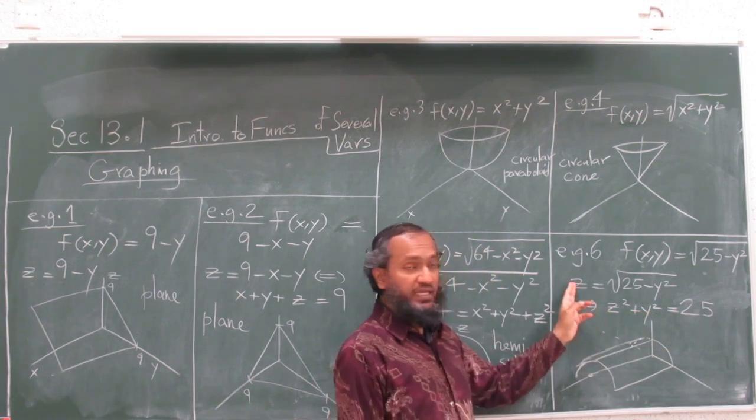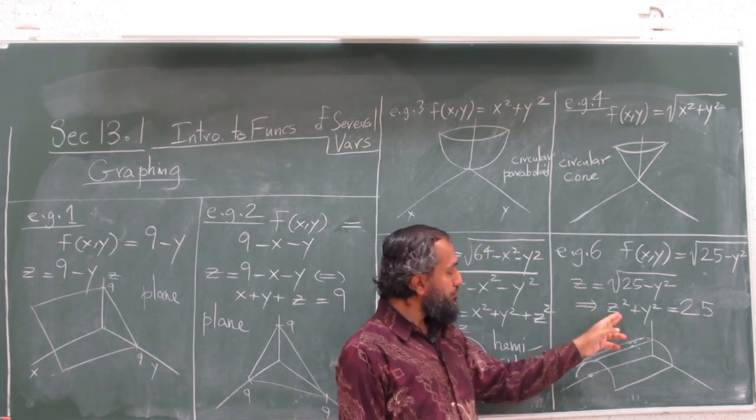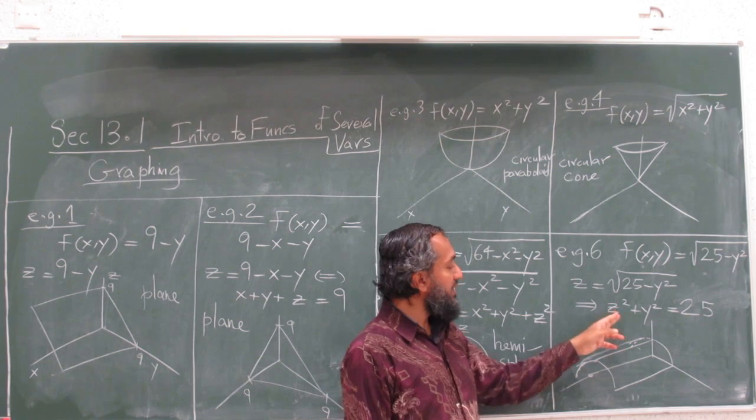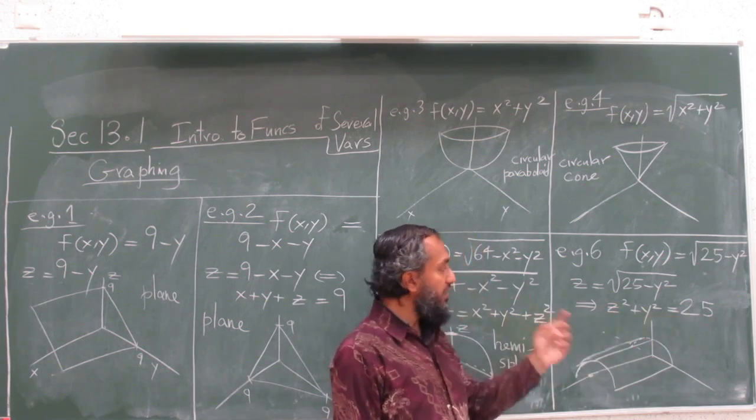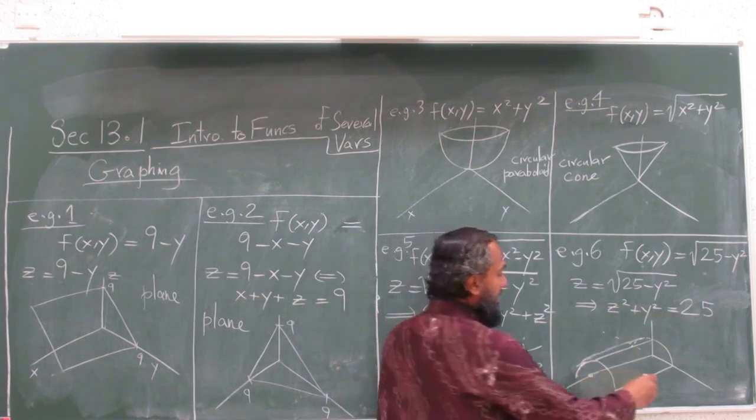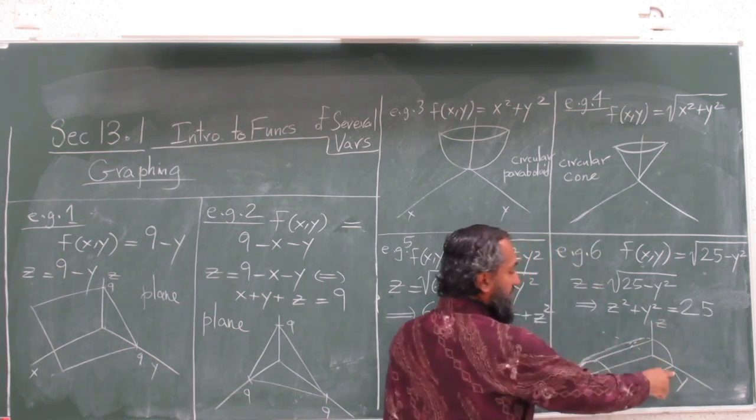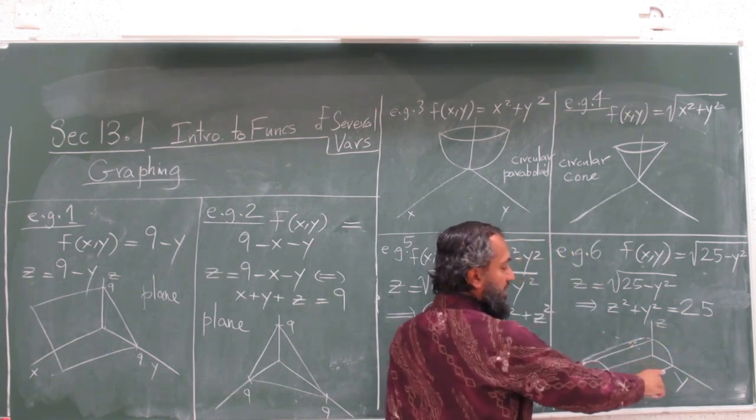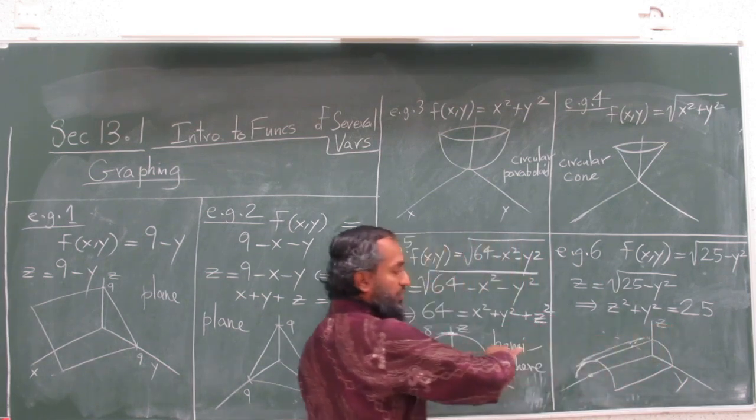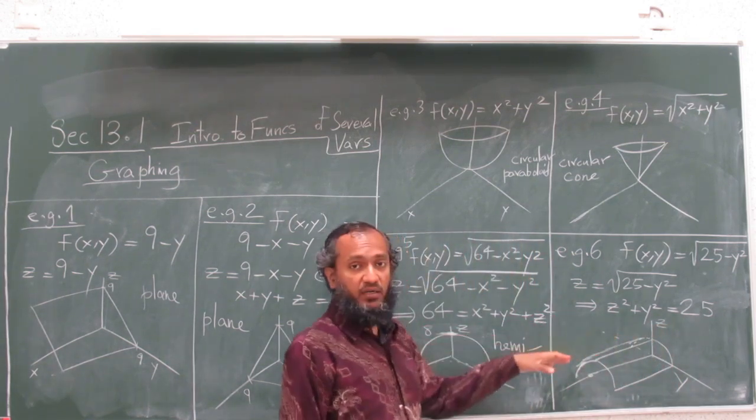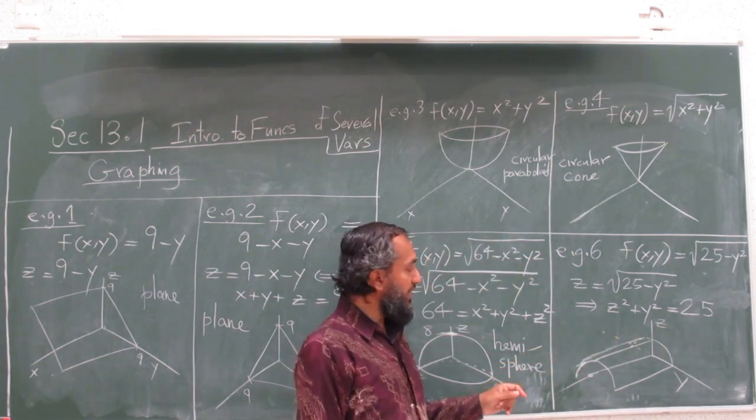So you get y² + z² = 25, which is a cylinder of radius 5 in the yz-plane. You draw a circle, only the top half of the circle, radius 5, and then extend it parallel to the x-axis. So you get a cylinder of radius 5.